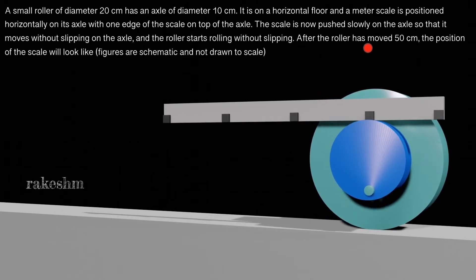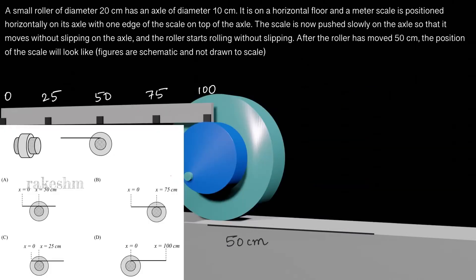After the roller has moved 50 centimeters, the question asks what the position of the scale will look like, with diagrams given in the options. In the options, the left end of the scale is x = 0 centimeters and the right end is x = 100 centimeters, marked at 0, 25, 50, 75, and 100.